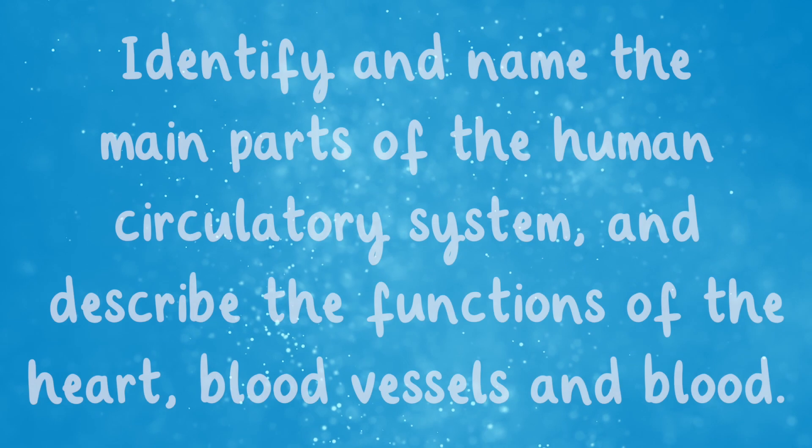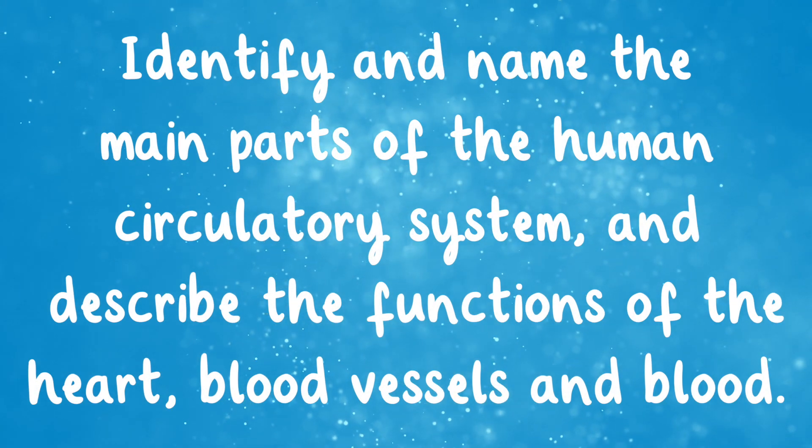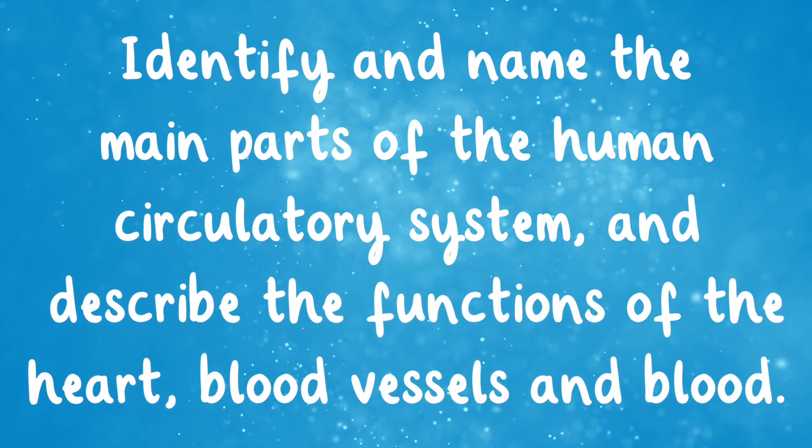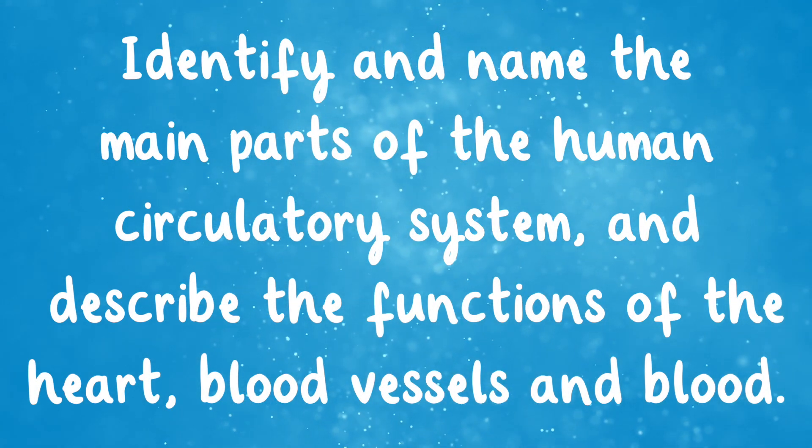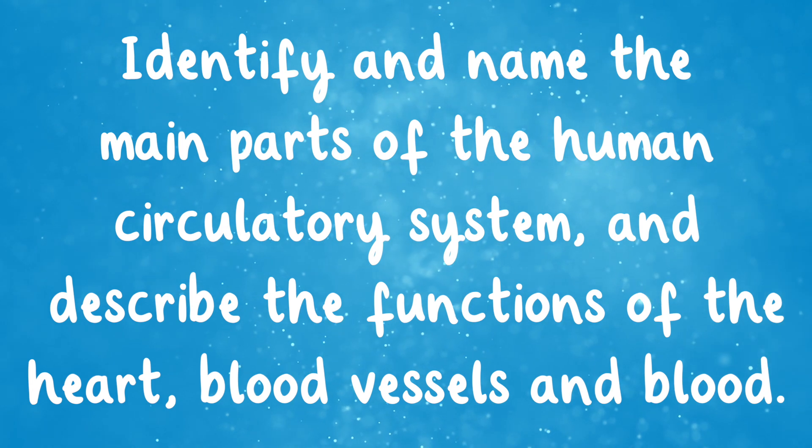Are you looking to teach the Year 6 Animals Including Humans National Curriculum aim? Identify and name the parts of the human circulatory system and describe the functions of the heart, blood vessels and blood. Well, look no further. We have everything you'll need to engage your students and teach them all they need to know.